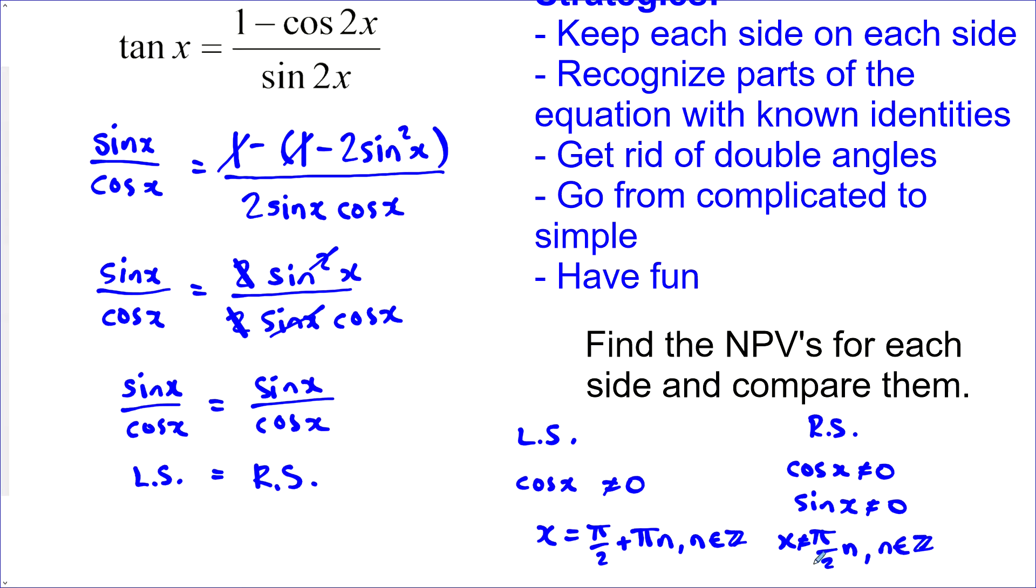Now you see that the non-permissible values are different for each side. And that's okay. For an identity, they just need to be equal for all the permissible values of the variable. For the non-permissible values of the variable, they can be different.